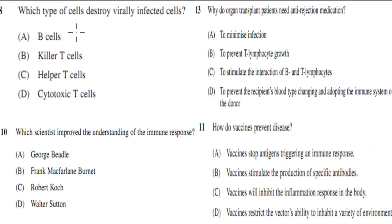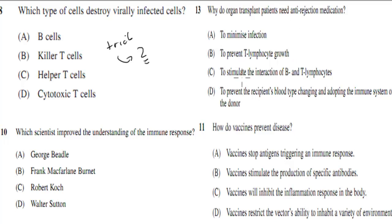Next questions. Which type of cell destroys viral-infected cells? B cells, killer T cells, helper T cells, or cytotoxic T cells — this is a trick question with two possible answers. Which scientist improved the understanding of the immune response? George Beedle, Frank McFarlane, Robert Koch, or Walter Sutton? Why do organ transplant patients need anti-rejection medication? And how do vaccines prevent disease? Pause the video and attempt the questions.